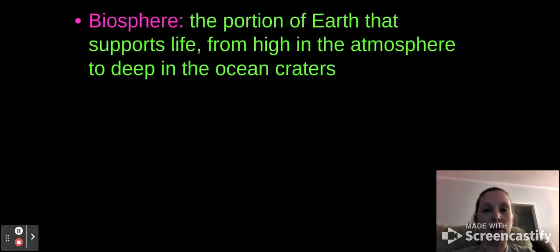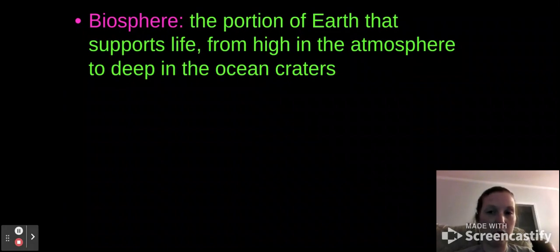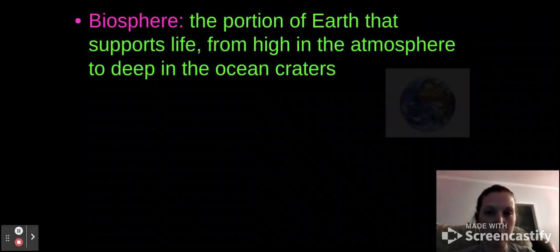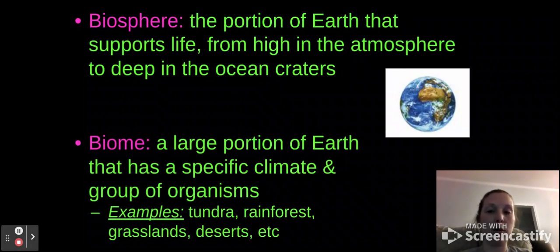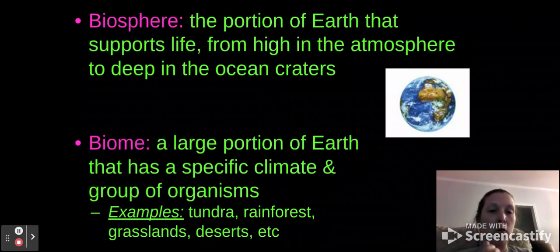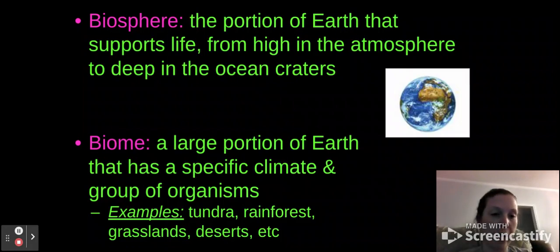A biosphere itself is the portion of Earth that supports life, from high in the atmosphere to deep down in the ocean craters. A biome is a large portion of the earth that has a specific climate and group of organisms. So we've seen some of these terms before: the tundra, rainforest, desert, grasslands, savannah, and taiga is another one.